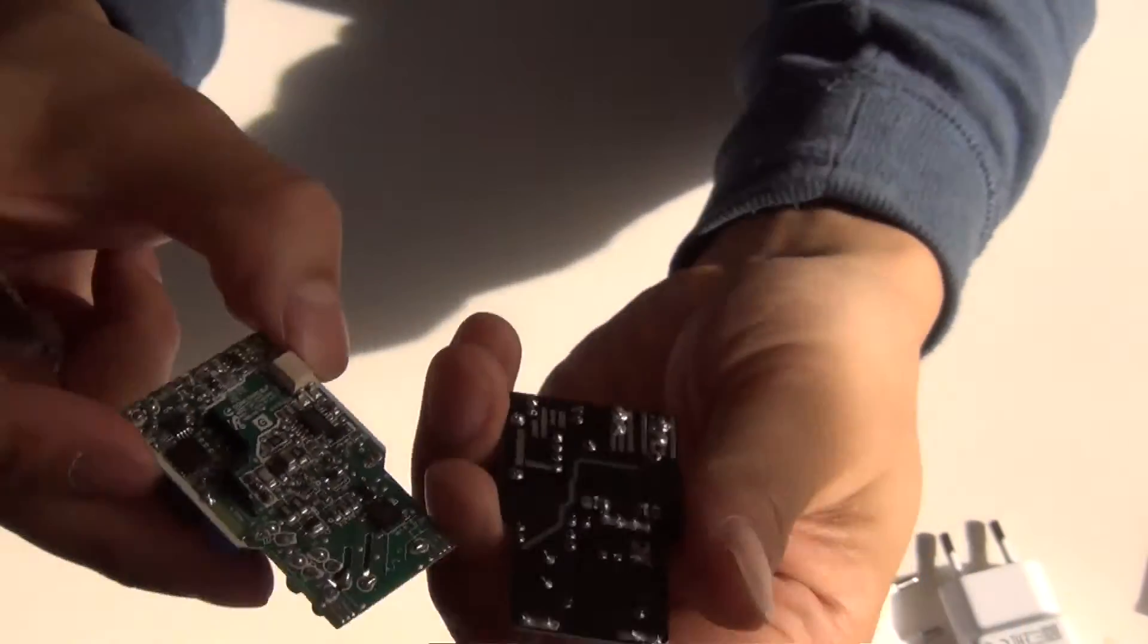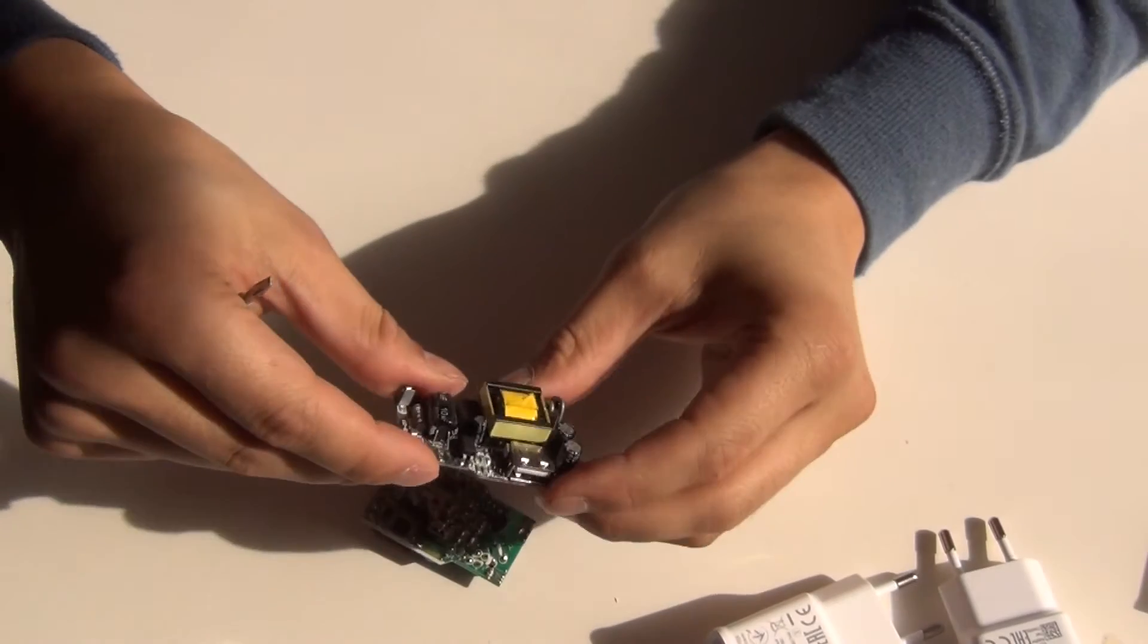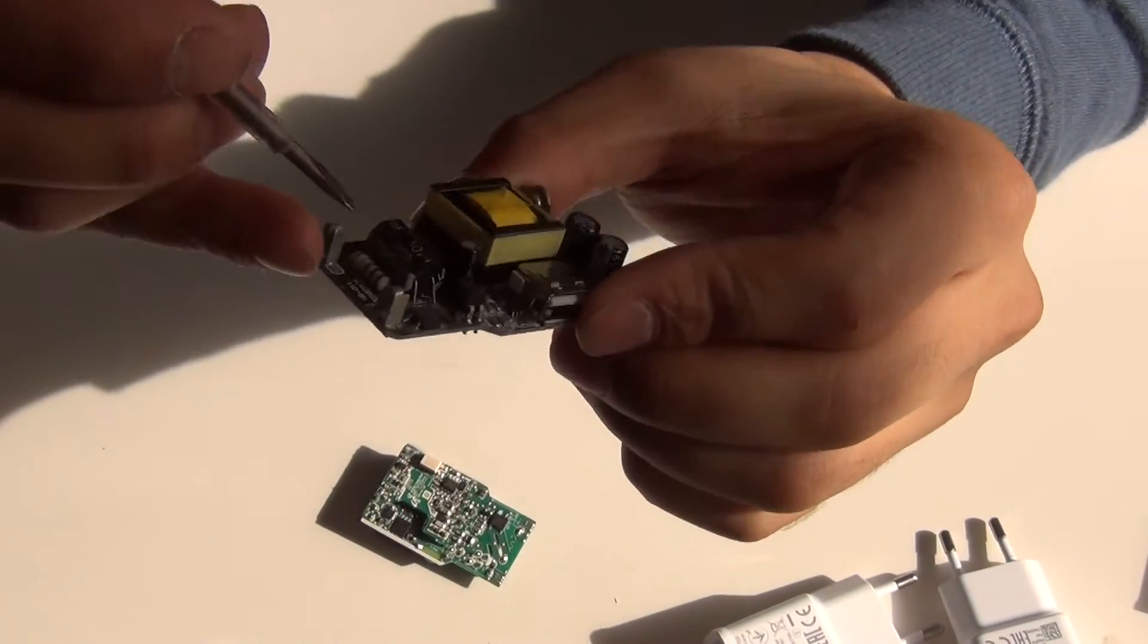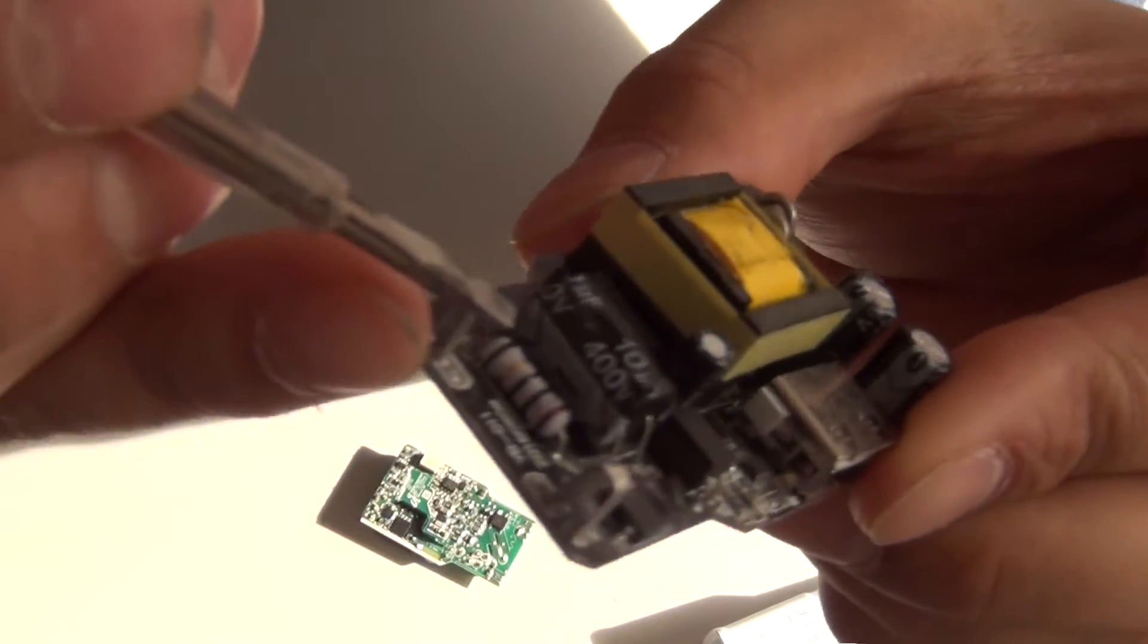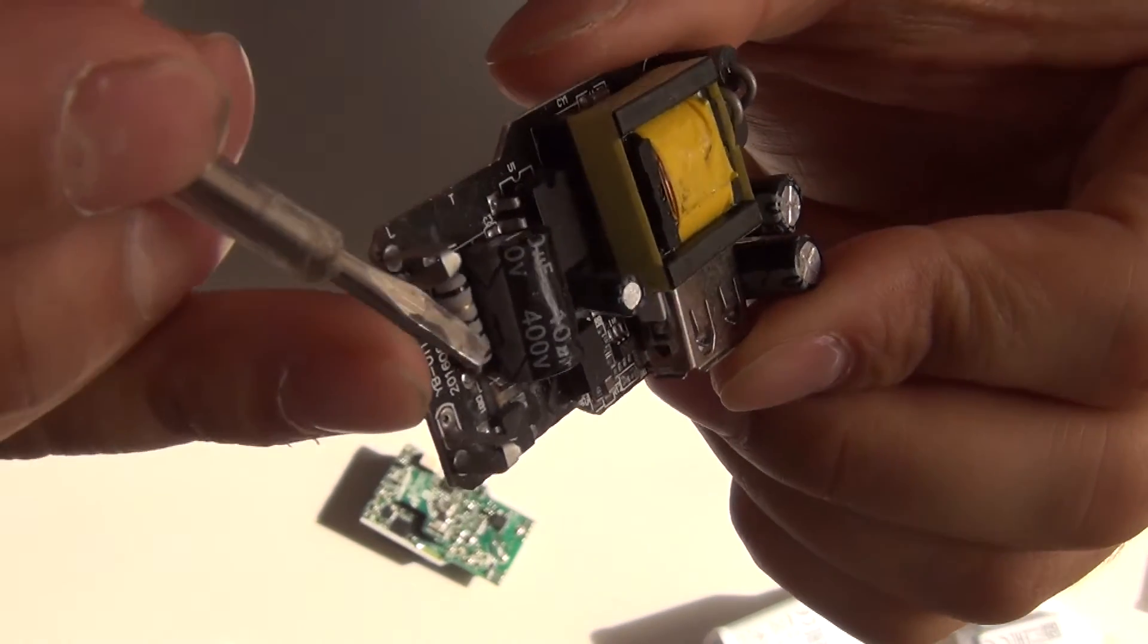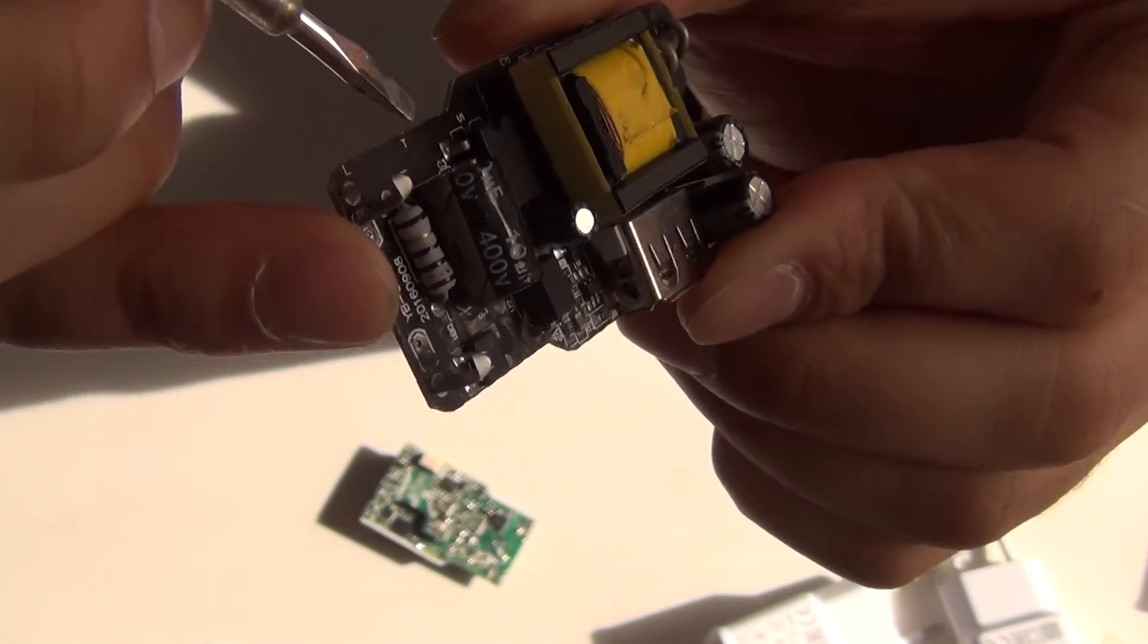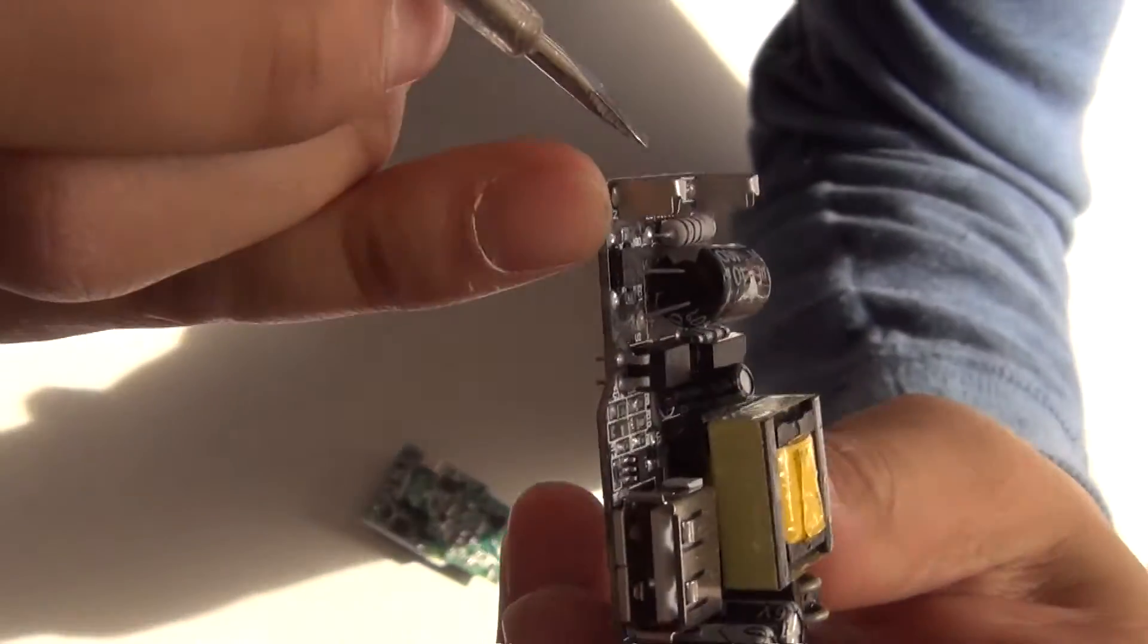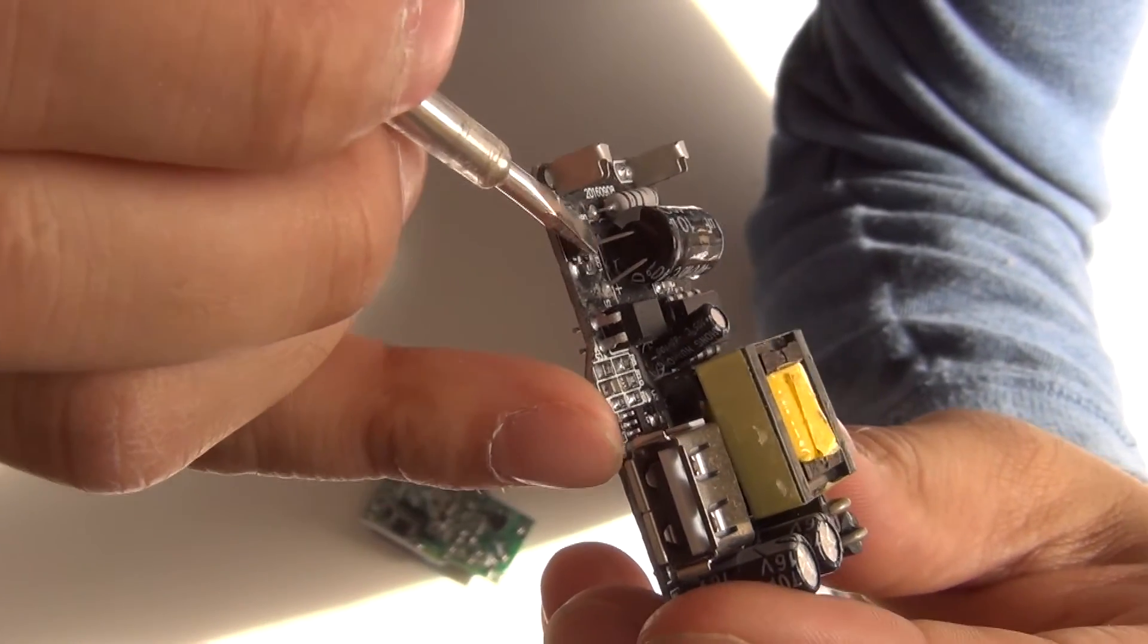So what I do notice when I am first looking to the PCB, I see that the fake one already started to have some corrosion on the capacitor, around the capacitor.